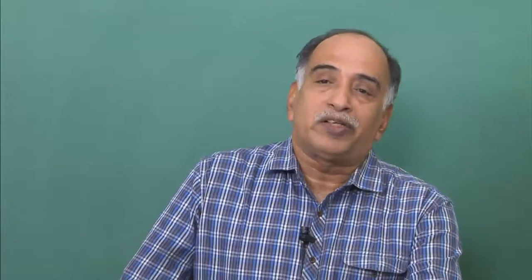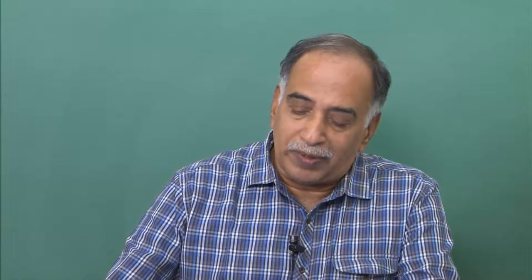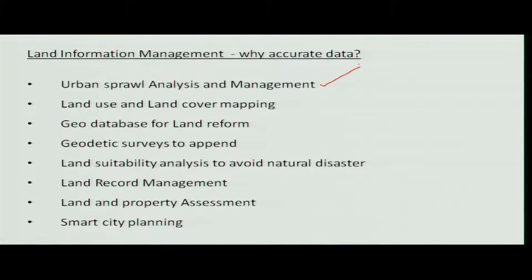We need accurate information at a single point so we can access it immediately and support decision-making in all developmental activities. The first application for accurate data is urban sprawl analysis — tracking conversion of previous land use such as agriculture, non-agriculture, used, and non-used land. The second need is greenery in urban areas: to decrease temperature and provide fresh air, we need land cover that takes care of heat.